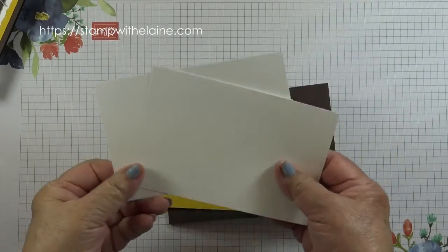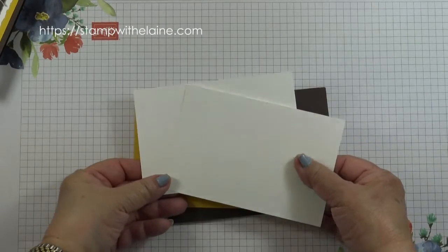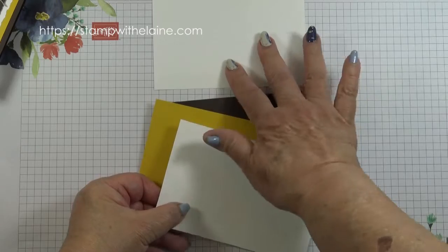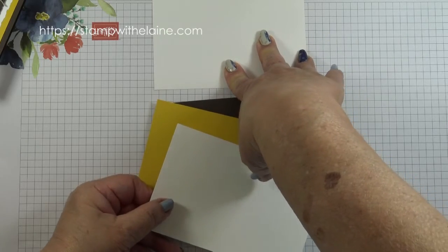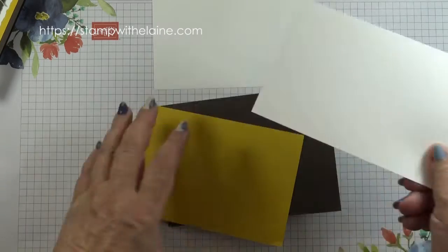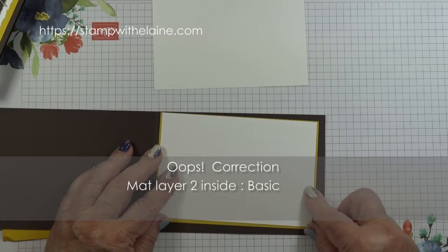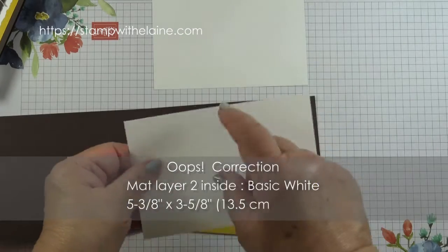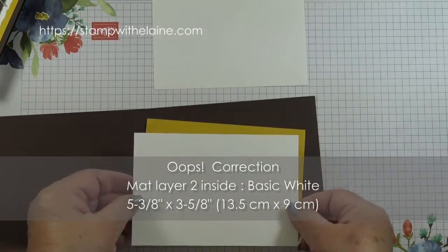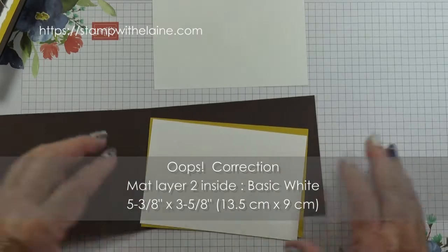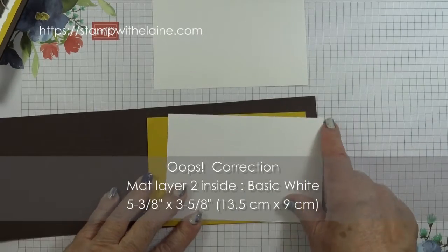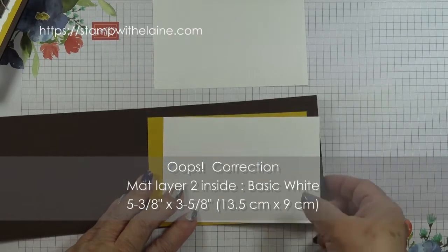I have two pieces of basic white cardstock as well and this one we're going to be cutting with a deckled edge rectangle die and this one I'm just using it plain for the inside and so this measures five and three eighths by three and three eighths. In metric that will be thirteen point five by eight point five centimeters.